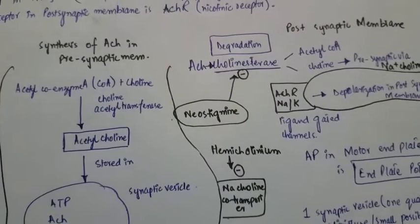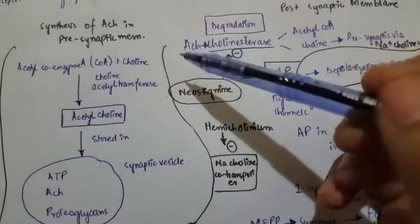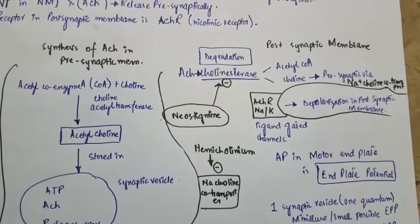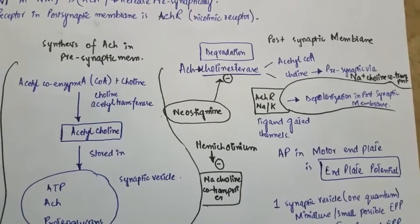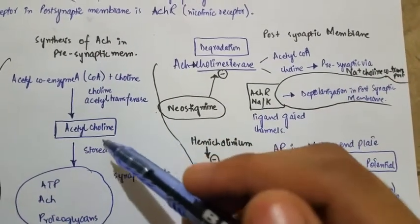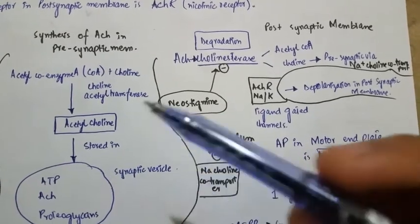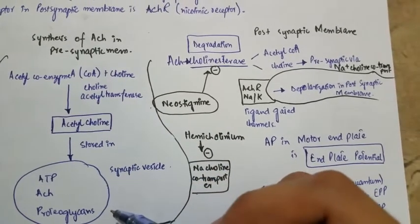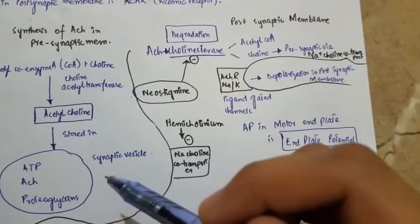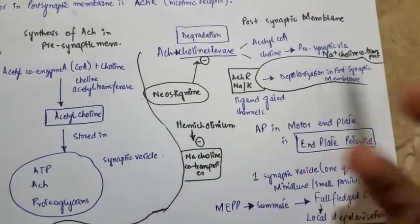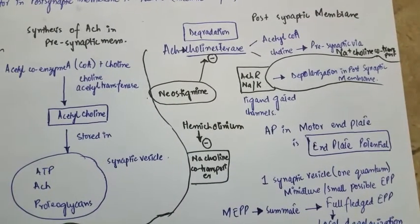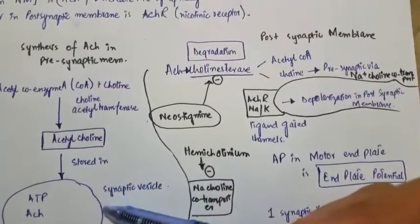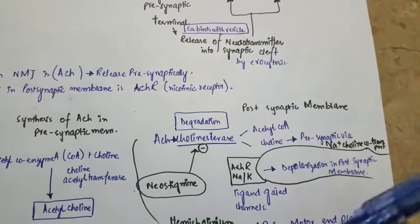Acetylcholine is formed in the presynaptic membrane by combining acetyl coenzyme A and choline with the help of the enzyme choline acetyltransferase. Acetylcholine is stored in synaptic vesicles containing ATP, ACh, and proteoglycan. When an action potential reaches threshold, there is an influx of calcium into the membrane, which binds to the vesicle and causes release of the neurotransmitter into the synaptic cleft.